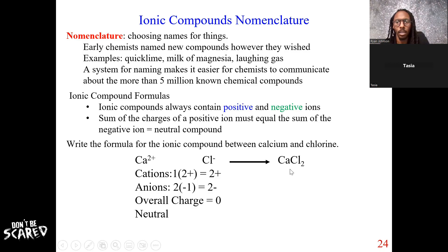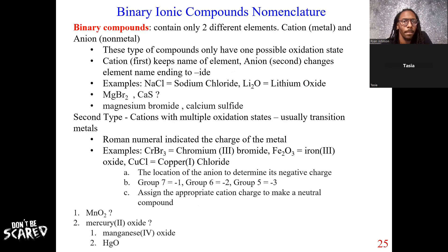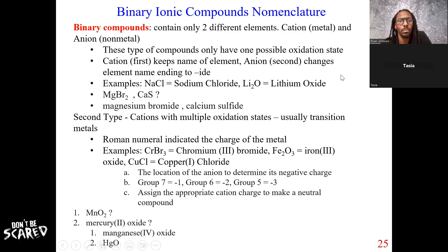So before I get to naming, do you have any questions? This is just a quick example. All right, so let's talk about when we go to name this. When it comes to naming ionic compounds, all you need to remember is that cations are first, anions are second. That's the first thing to remember — cation first, anion second. Remember that the cation is a positive ion.